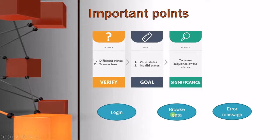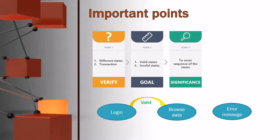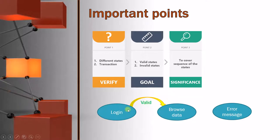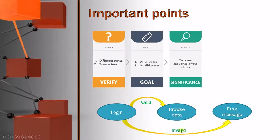If you perform a valid event—that means your user ID is correct and your password is correct—then you are able to browse the data. Whereas the other one could be invalid transaction: your login is incorrect or your password is incorrect or both are incorrect. In that case, you will land in the error message.